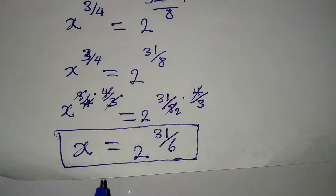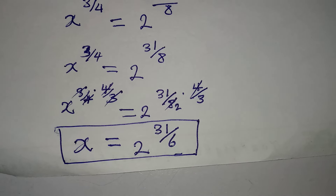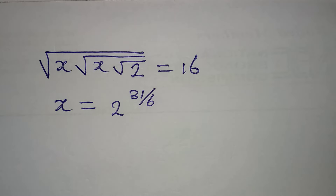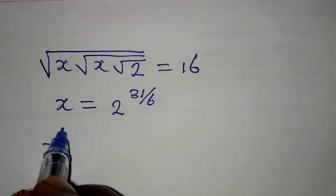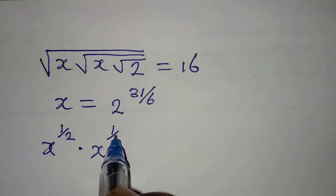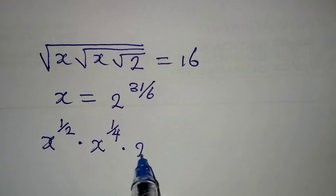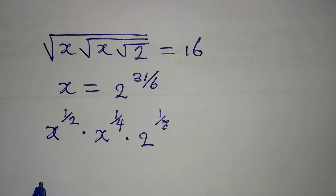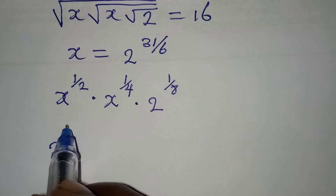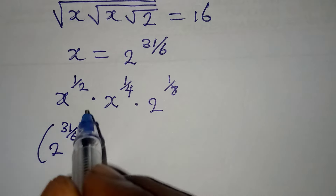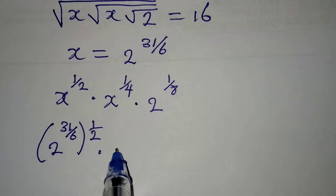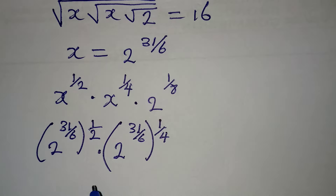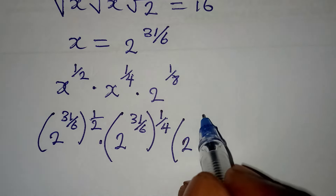You might be asking: will this truly satisfy the equation? Let's put it in and check. This is the original equation, and we substitute x equals 2 to the power of 31 over 6. Remember, this is the same as x to the power of 1 over 2, multiplied by x to the power of 1 over 4, multiplied by 2 to the power of 1 over 8. Substituting, we get 2 to the power of 31 over 6, raised to the power of 1 over 2, times 2 to the power of 31 over 6 raised to 1 over 4, times 2 to the power of 1 over 8.